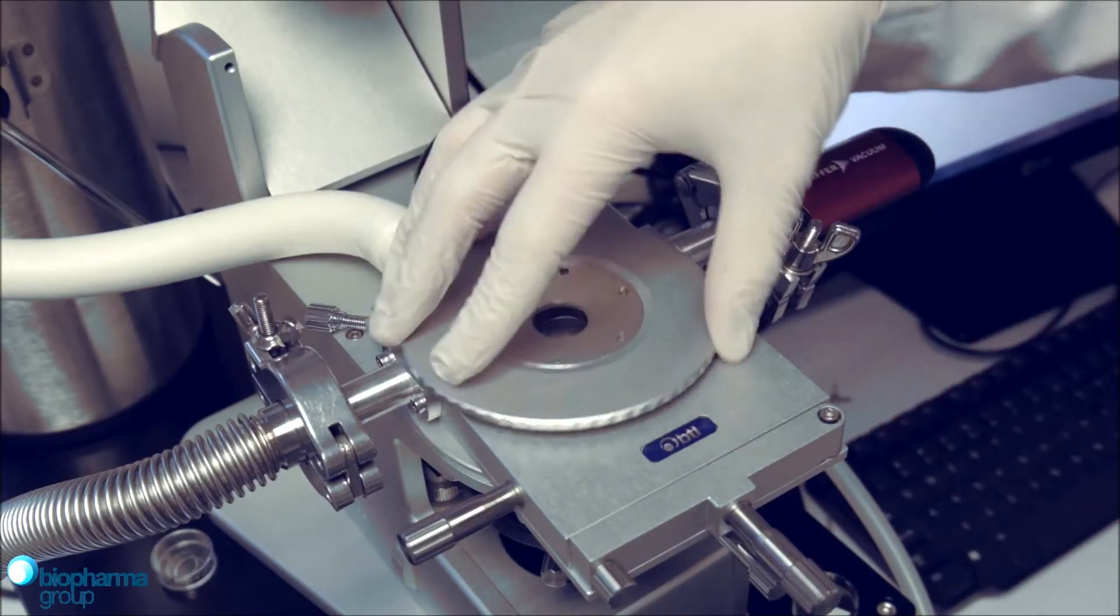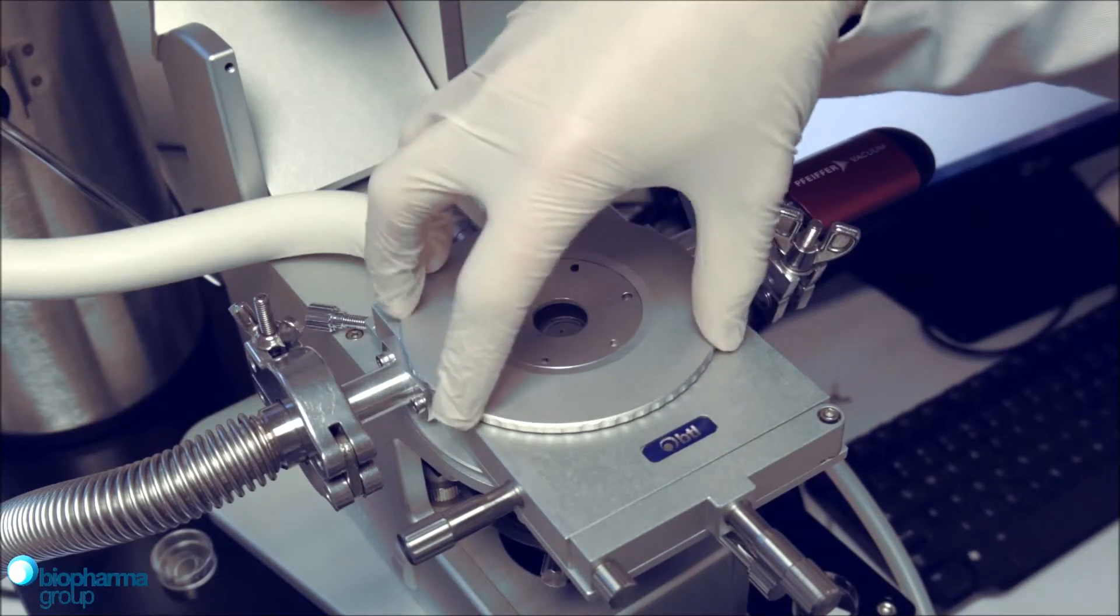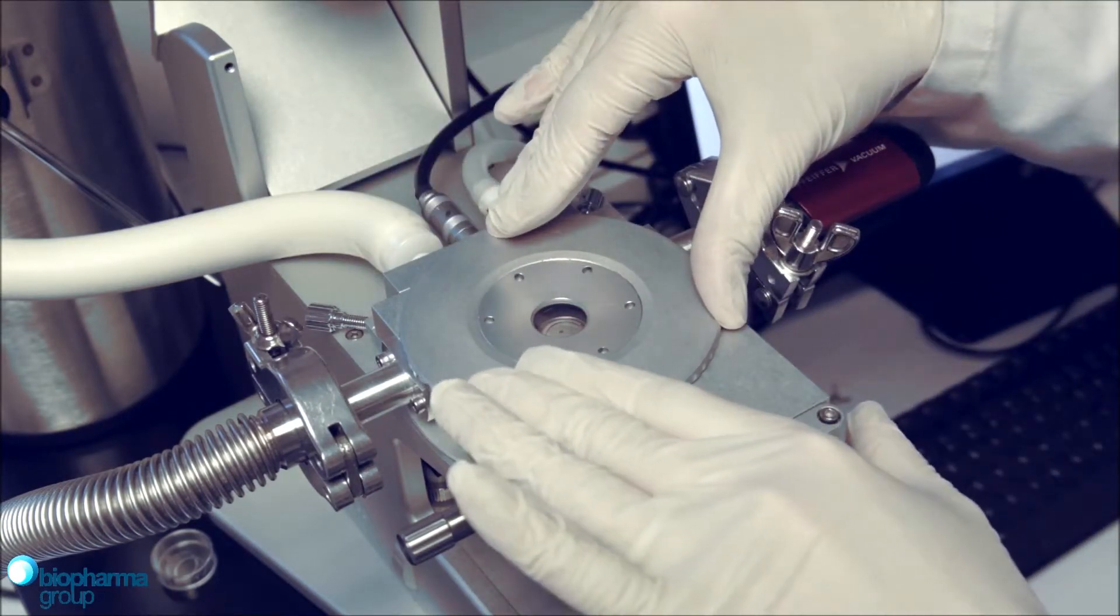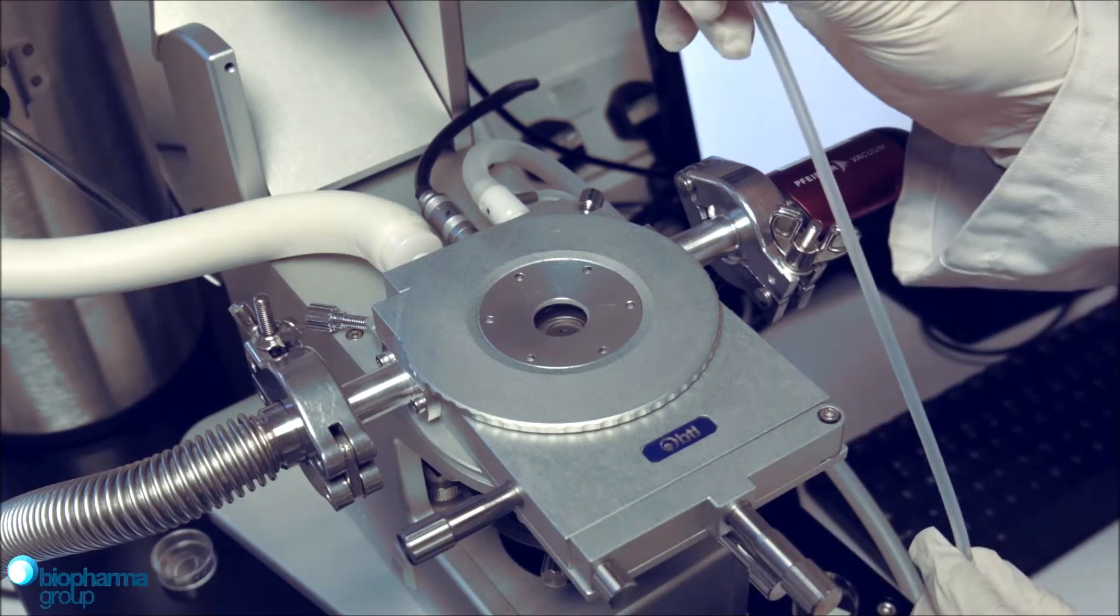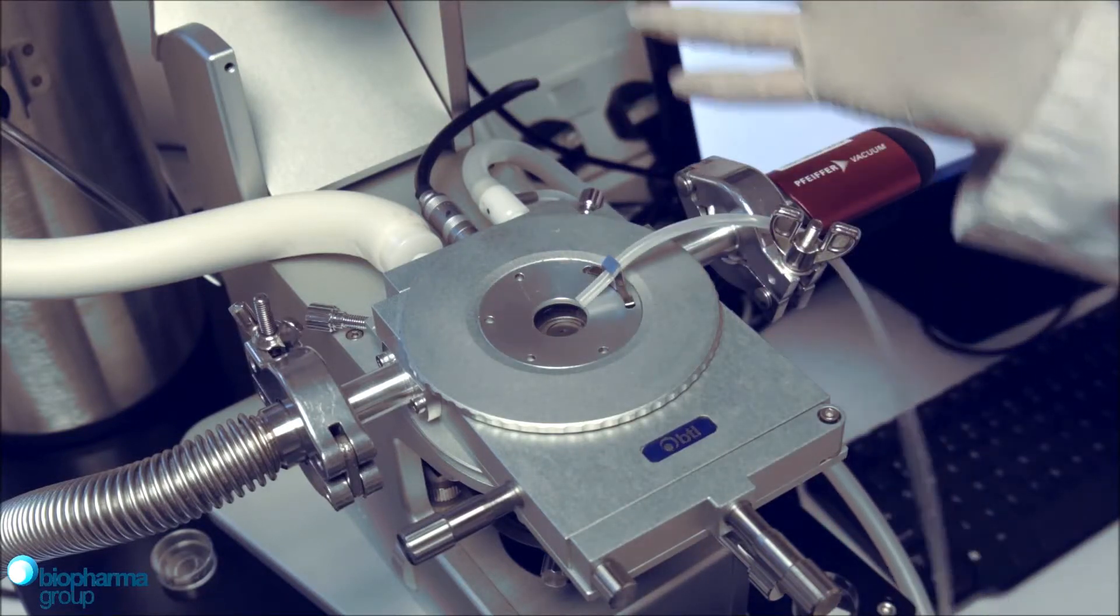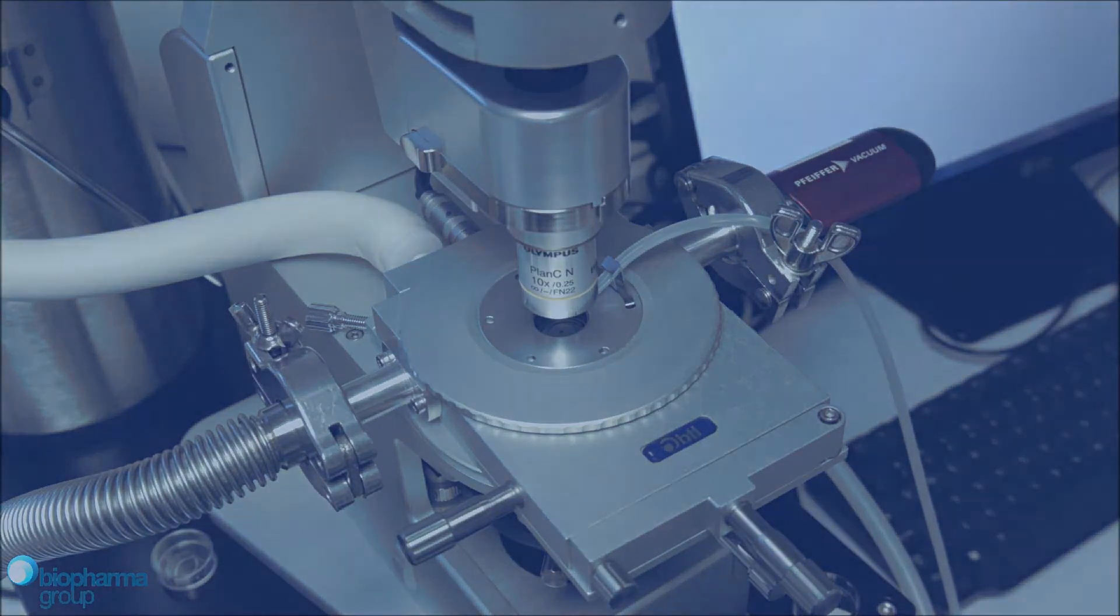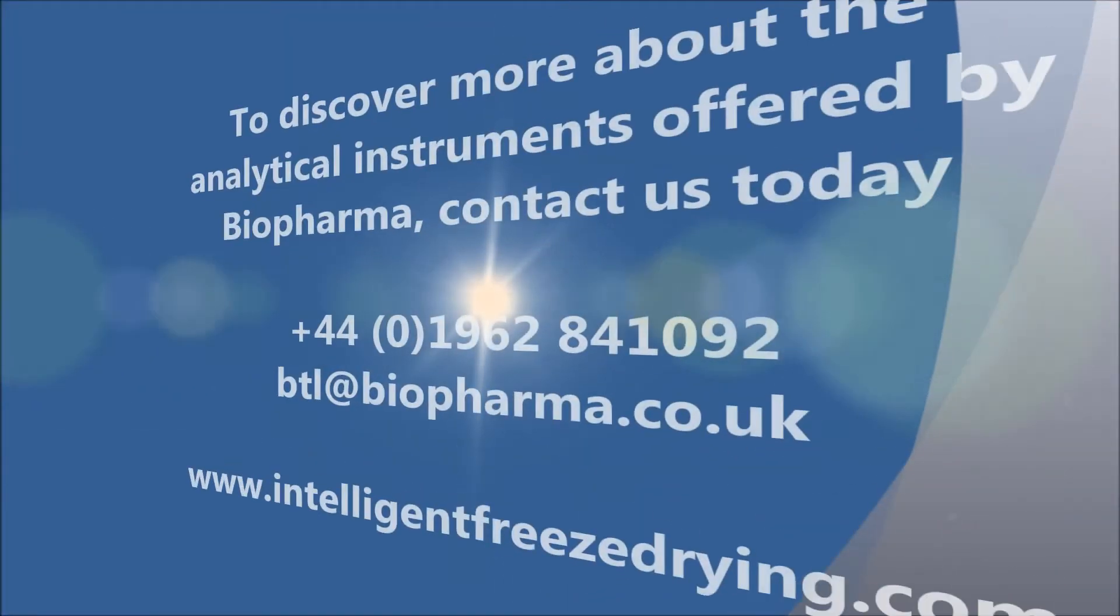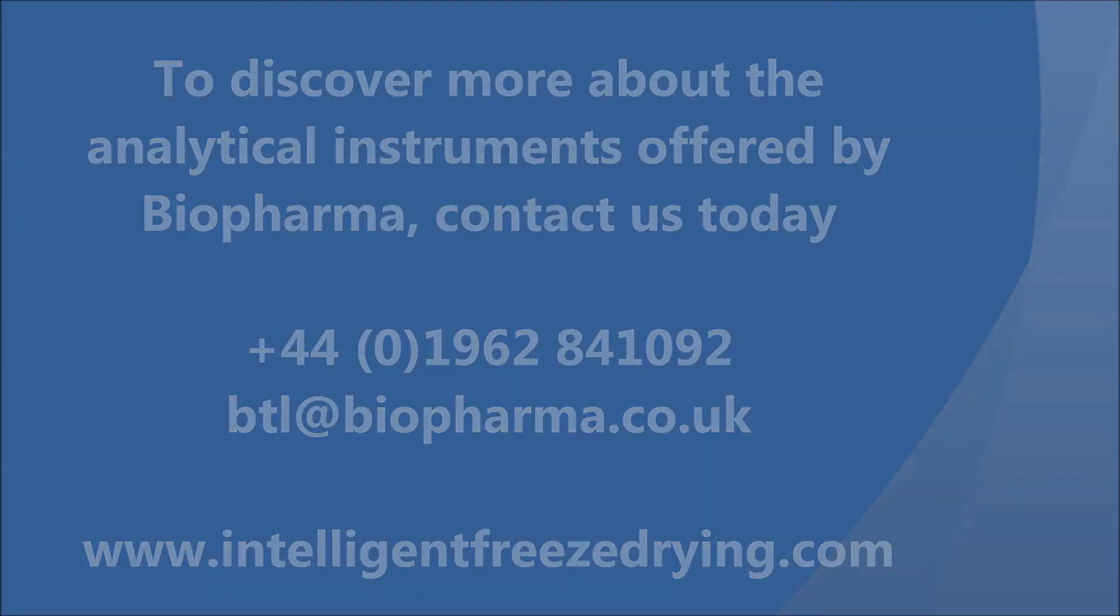Finally, we need to replace the chamber door, screwing only hand tight, then placing the vent from the nitrogen pump into the hole surrounding the window. This prevents the buildup of condensation that may obstruct our view. This completes the loading of the sample, and we are now free to conduct the analysis.